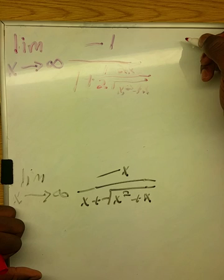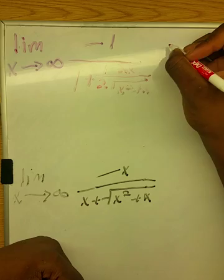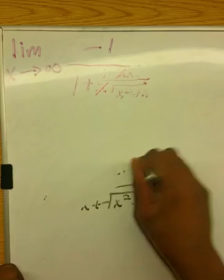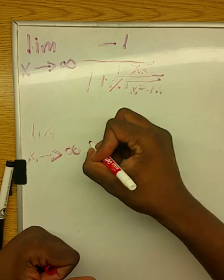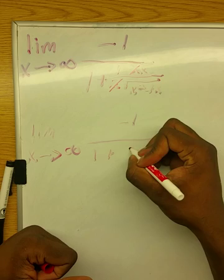Okay, and basically the 2s will cancel out and we're left with the limit as x approaches infinity of negative 1 over 1 plus x over the square root of x squared plus x.